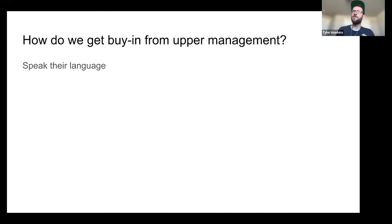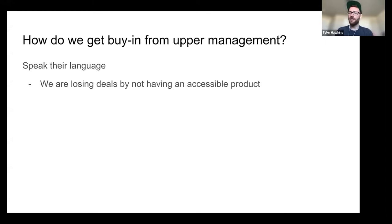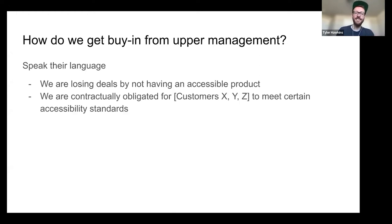Once you have that personal motivation, how do you get buy-in from upper management? The key is to speak their language. It's great to be motivated by doing the right thing, but businesses also consider cost-benefit analysis. If you're talking to a CFO, VP of sales, or product leadership, put it in business terms: we're losing deals by not having an accessible product, or we're contractually obligated for certain customers to meet specific accessibility standards. When you put it in business language, it's a lot easier to get buy-in.